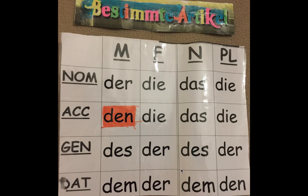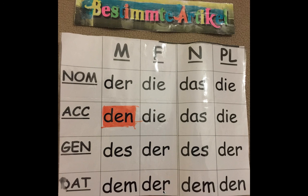If you were to say 'I'm giving the woman the jacket': ich gebe. We know the receiver of the object is female, so the female is die, and die goes to der. Ich gebe der Frau. What are you giving her? Den Mantel.